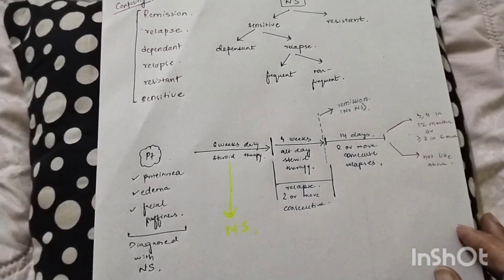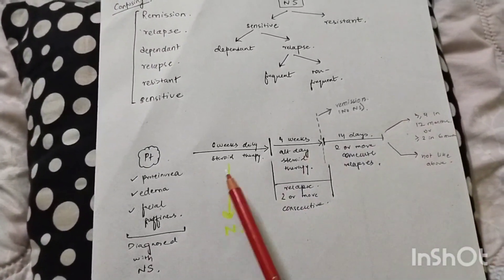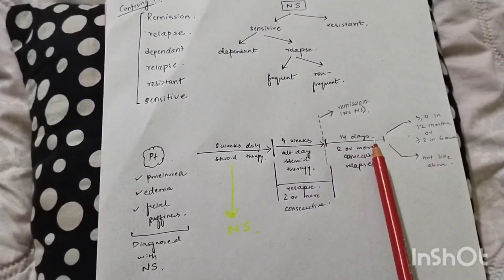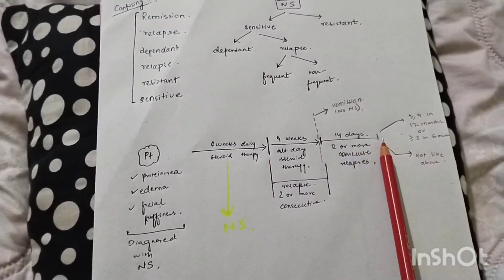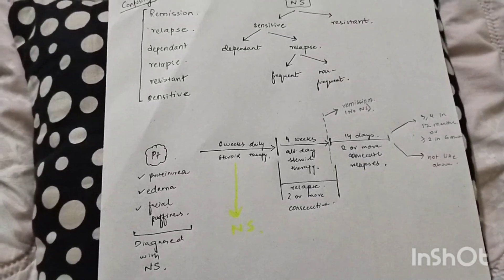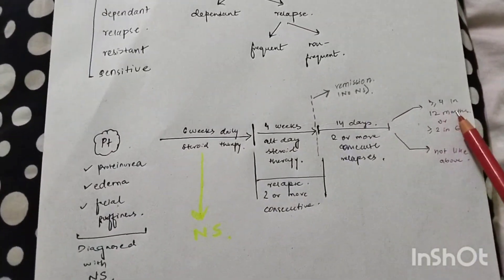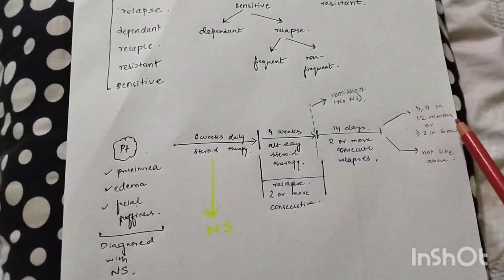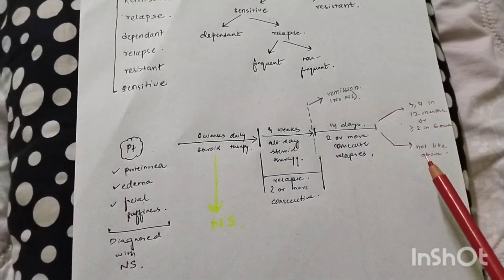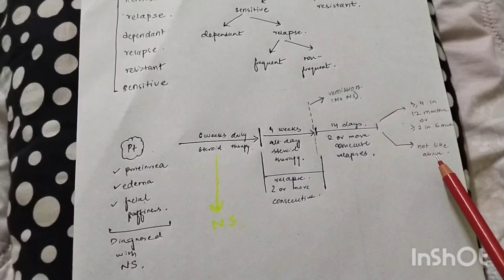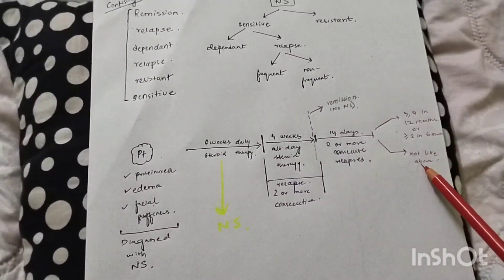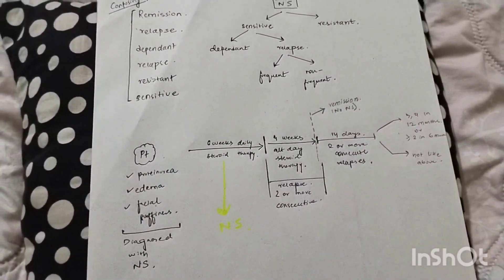What is the last case? You have given 6 weeks of steroid therapy and 4 weeks of alternate-day therapy. The patient is fine, but then the patient has relapses after a few months. Now, if these relapses are greater than or equal to 4 in 12 months, or greater than or equal to 2 in 6 months, you call it frequent relapses. If the patient is having relapses but not in this pattern, then you call it non-frequent relapses.